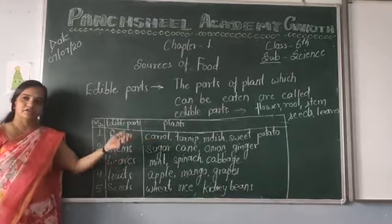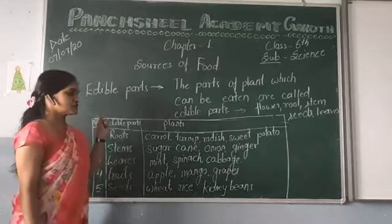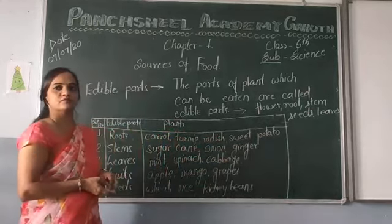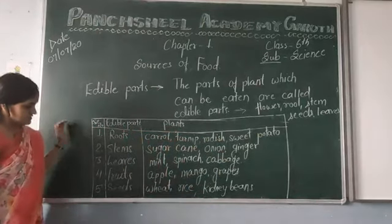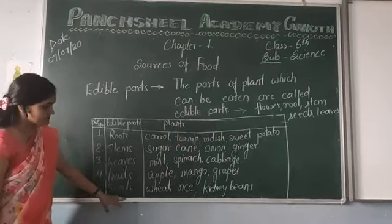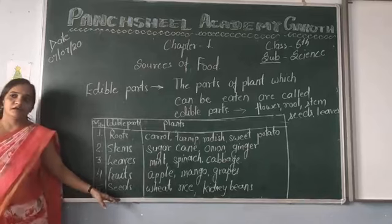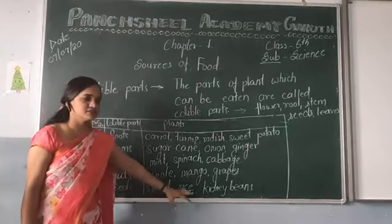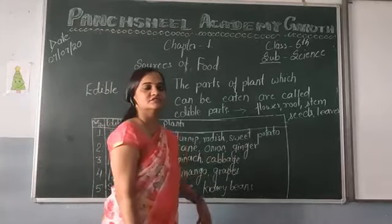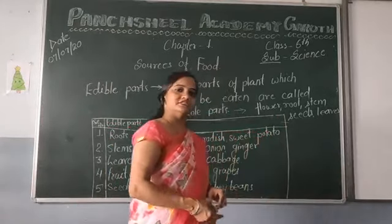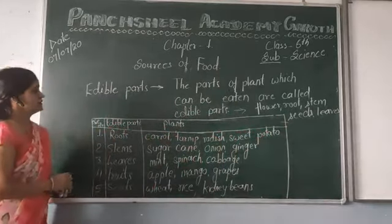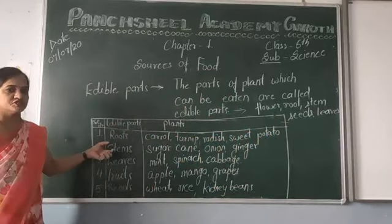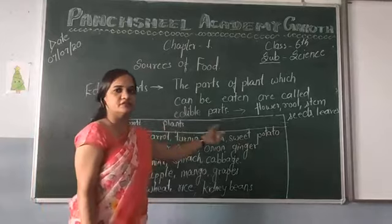Fruits we eat are apples, guava, mango, grapes, papaya — all these are fruits which are eaten. The seeds are also edible parts of plants. Plants whose seeds we eat include wheat, rice, kidney beans, maize, groundnut, etc. All these are parts of plants eaten from different kinds of plants.